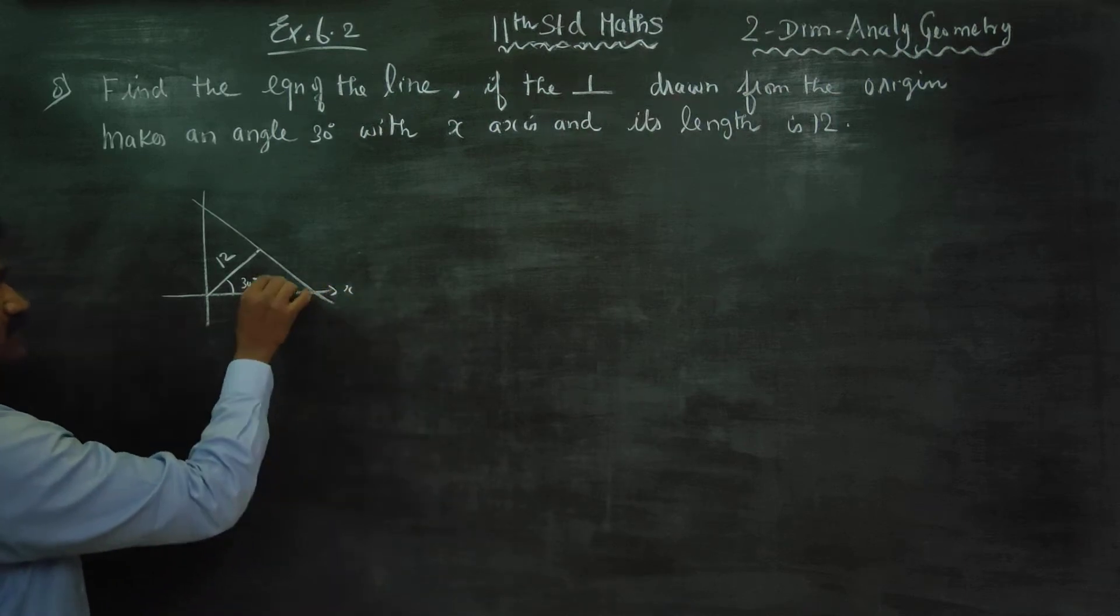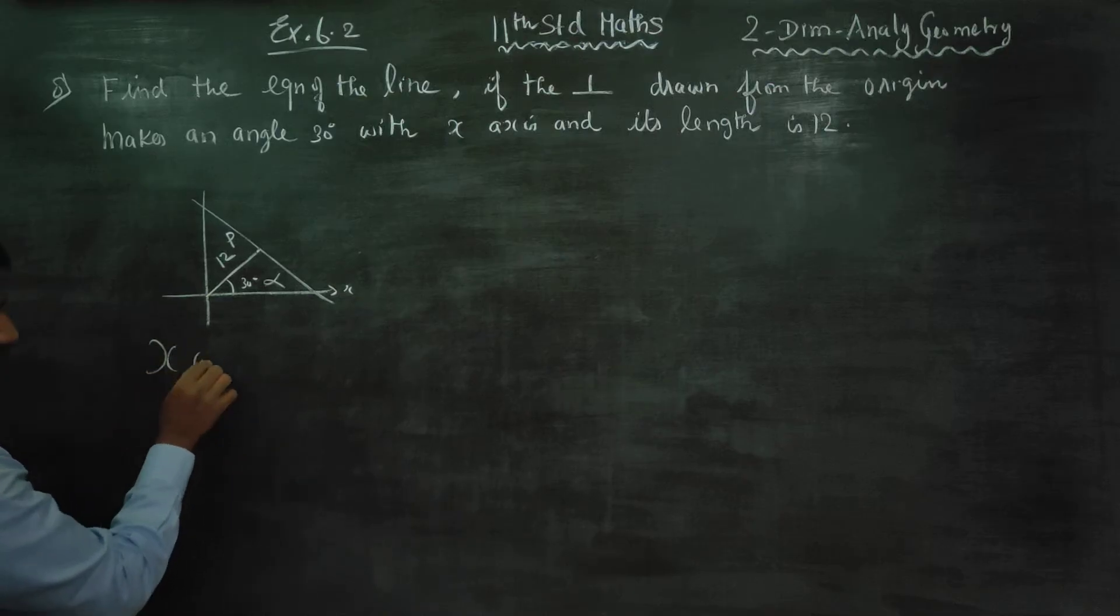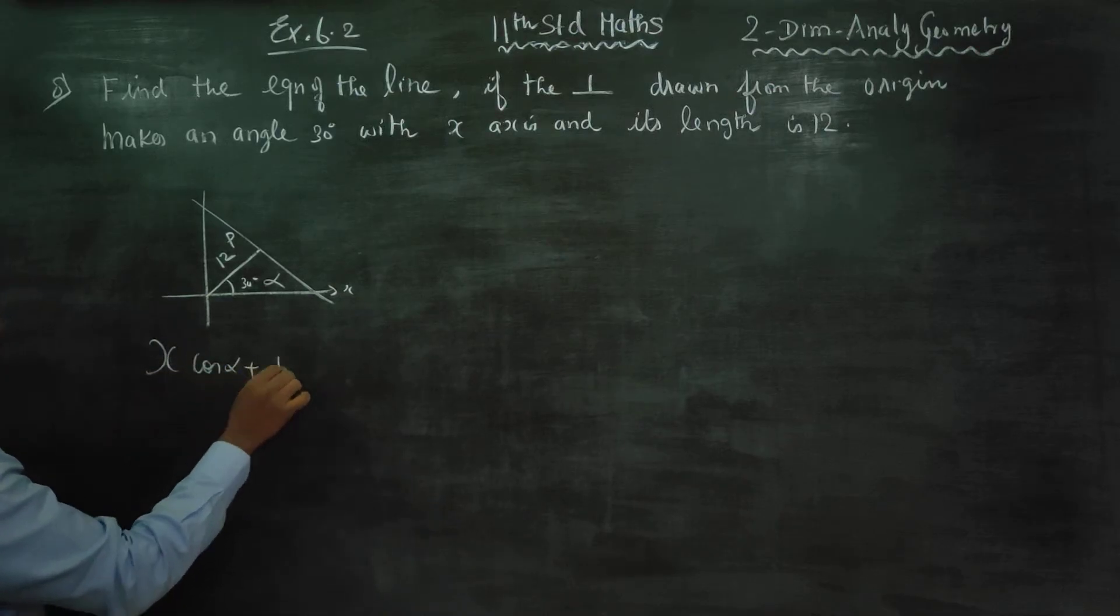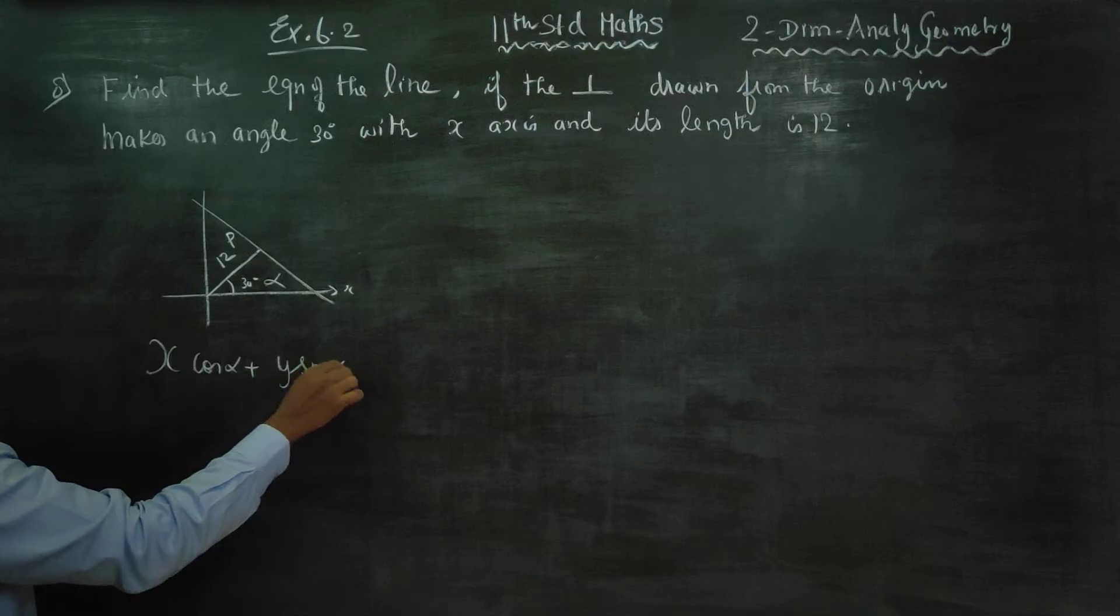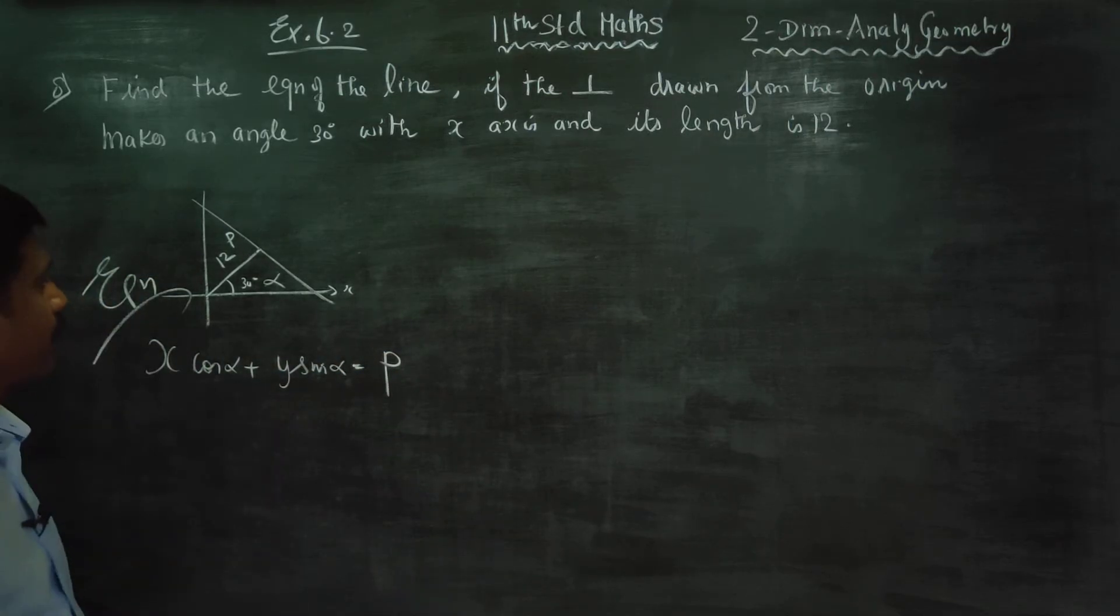This is my alpha and this is my p. This is a ready-made formula. x cos alpha plus y sin alpha is equal to p. This is a ready-made formula.